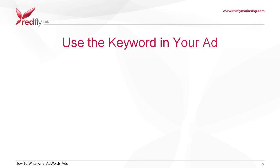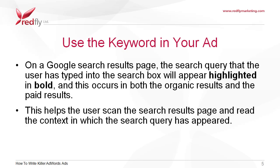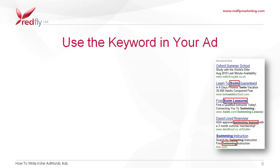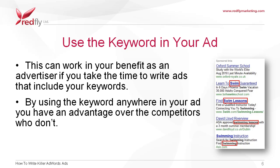Use the keyword in your ad. On a Google search results page, the search query that the user has typed into the search box will appear highlighted in bold, and this occurs in both the organic results and the paid results. This helps the user scan the search results page and read the context in which the search query has appeared. This can work in your benefit as an advertiser if you take the time to write ads that include your keywords. By using the keyword anywhere in your ad, you have an advantage over the competitors who don't.